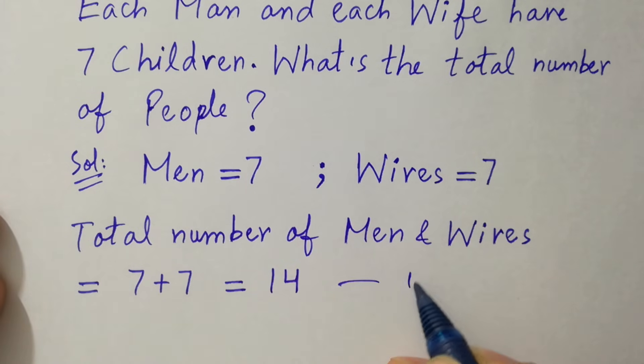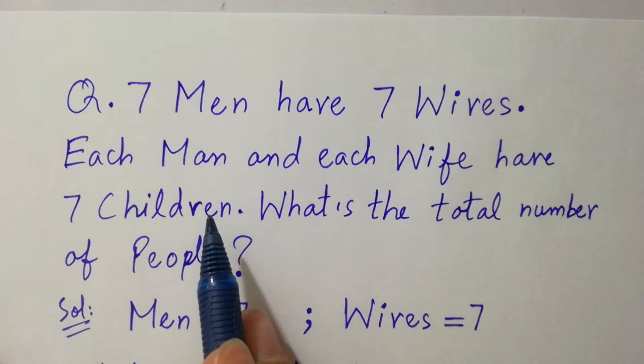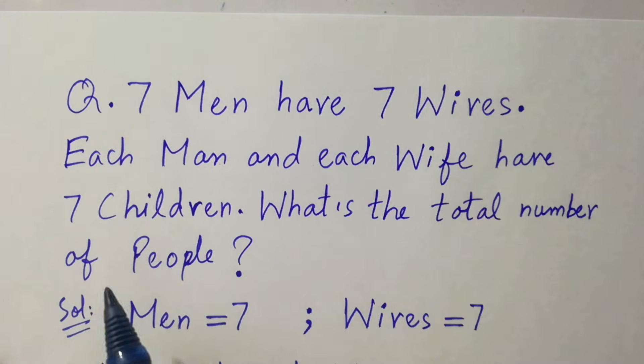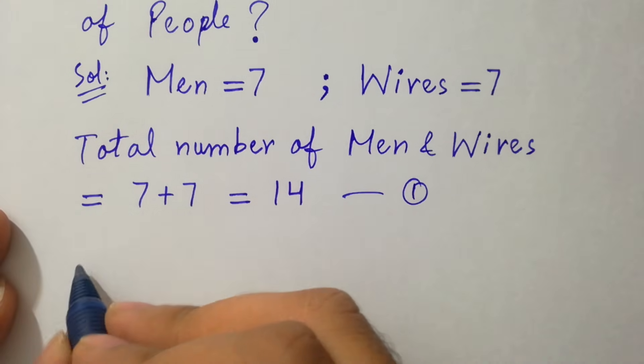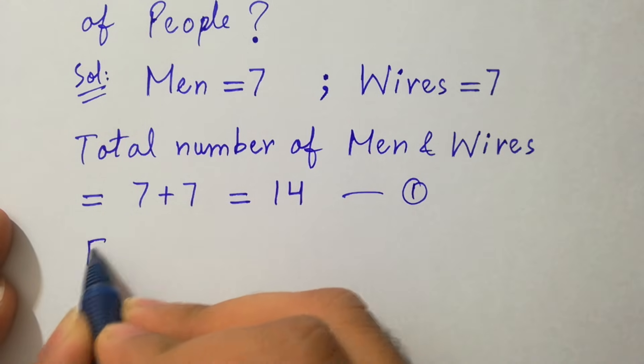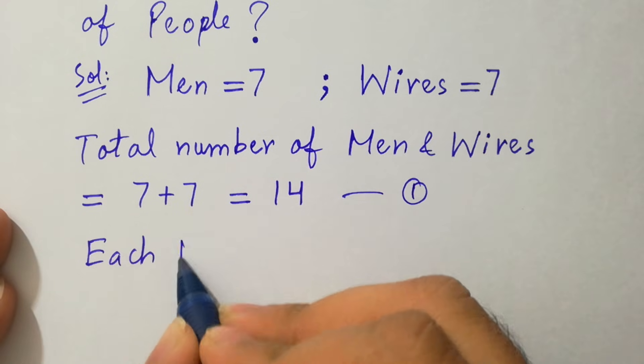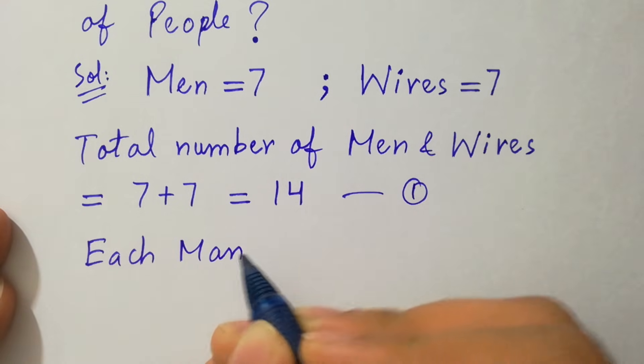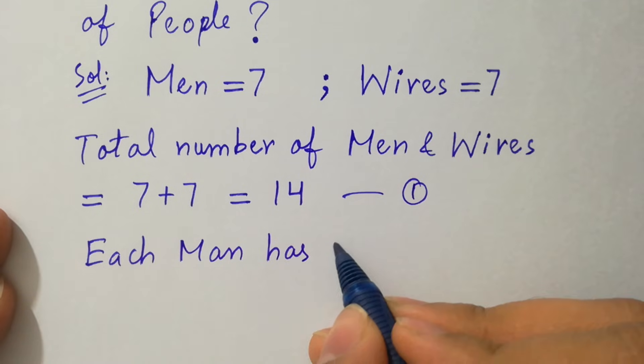Say this is first equation. Now see the second line. Each man and each wife have seven children. It means each man has seven children.